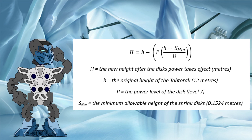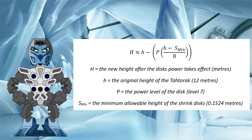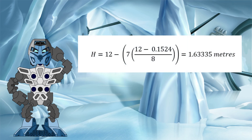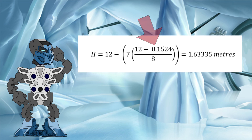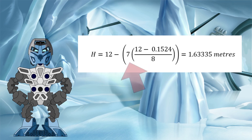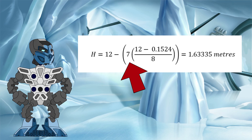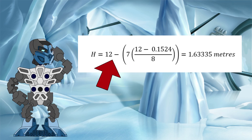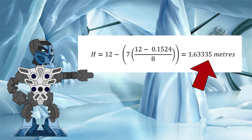So, what did you get? Let's work it out here and compare our answers. Remember, we need to do the operations in the parentheses first. So, if S min is 0.1524 meters and lowercase h is 12 meters, then our first operation comes out at 12 minus 0.1524, which equals 11.8476. Dividing that by 8 gives us 1.48095 as our reduction factor. Next, we multiply this by 7 as the power level of our disc, giving us a total reduction of 10.36665 meters. Taking that away from the Tatarak's original height of 12 meters, we get a new height of 1.63335 meters, or 1.63 meters if we round to two decimal places.